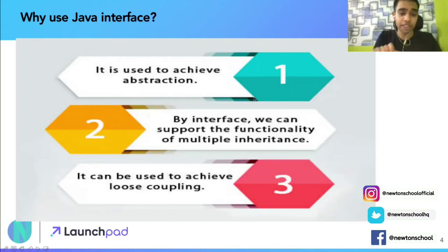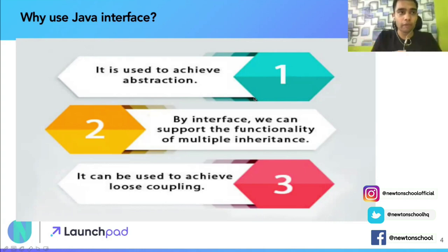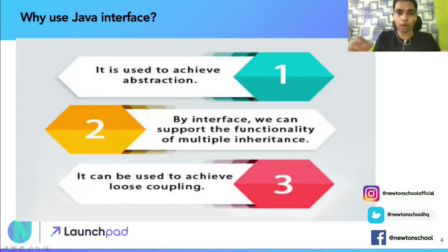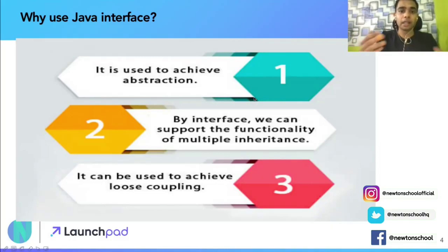Third, and a very important point for senior developers: achieve loose coupling. If you're working in large distributed services, you need to ensure your service architecture is not monolithic but moves toward microservice architecture. Your microservices should be loosely coupled. You can define an interface and have all other classes implement that interface, which provides a loosely coupled architecture in a distributed model.